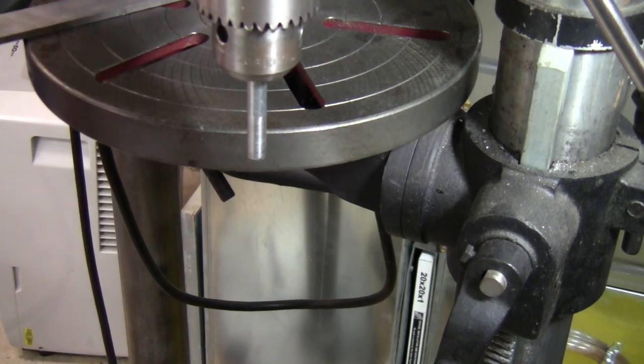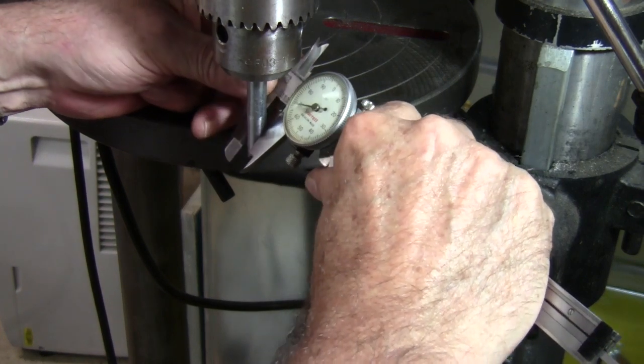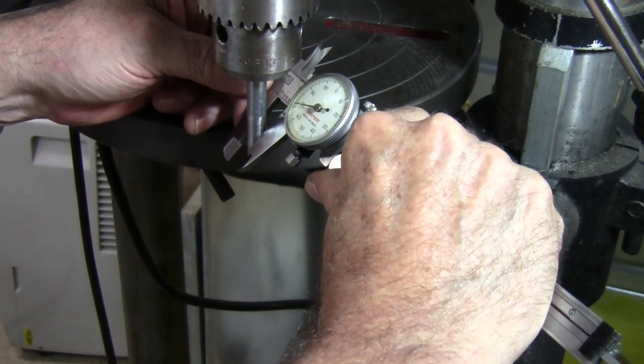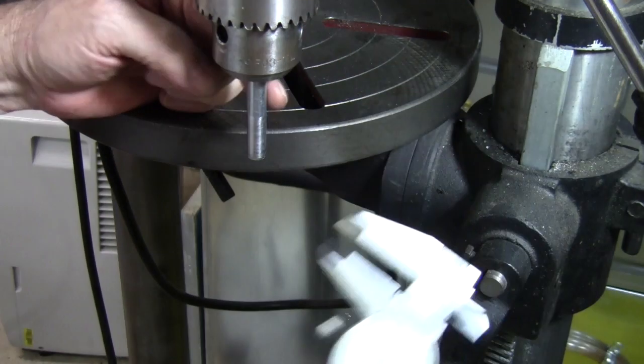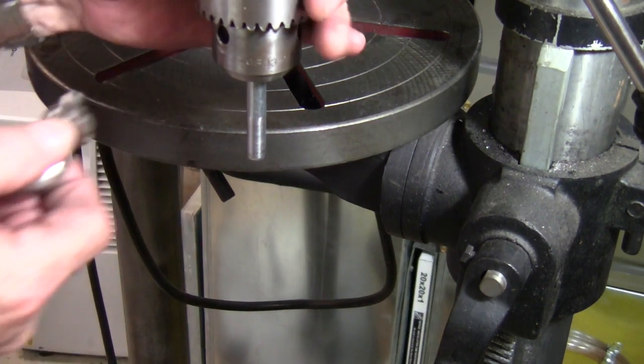Start filing on that bolt until it's down to 0.348. Now it might take a while because you've got 20 thousandths to take off this particular bolt. I tried to find the bolt that came the closest to 0.348 and that was it.